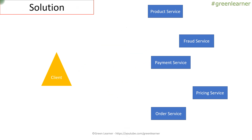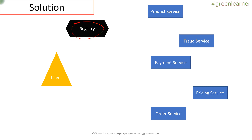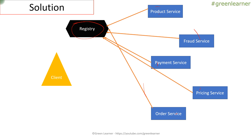So what is the solution? What if we add one more extra service here which we are calling the registry service? All these individual services get themselves registered with the registry service — whatever location the product service has, it registers itself here. When it scales from one instance to two, the second instance also automatically registers with the registry service. When a third service comes up it can inform the registry that it's available, and the registry takes care of that.